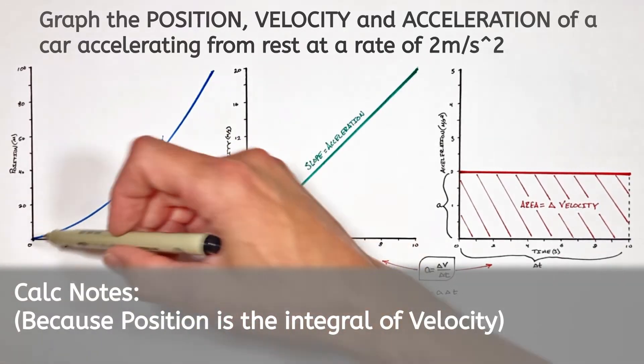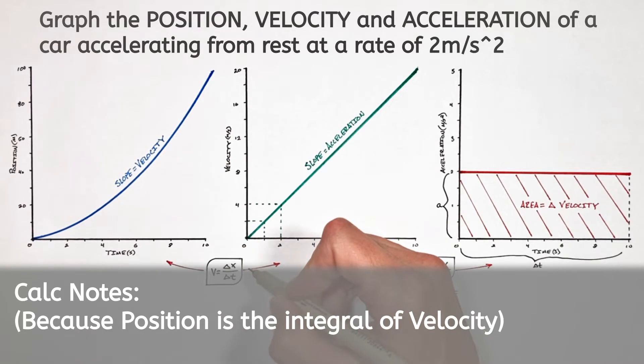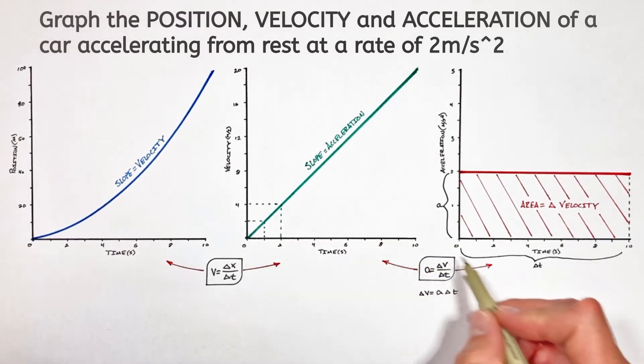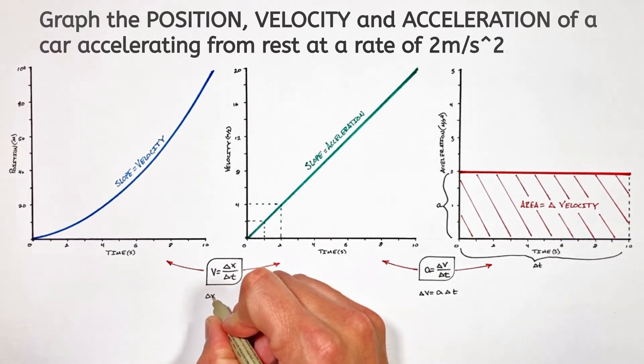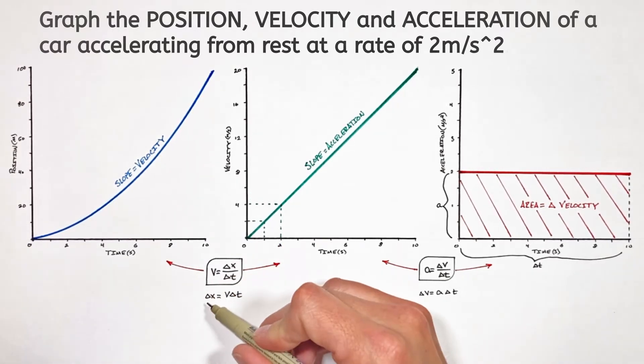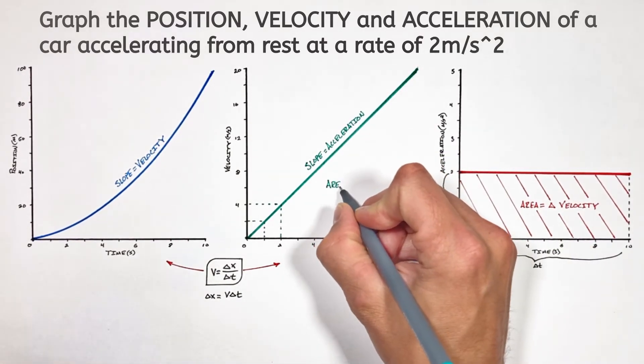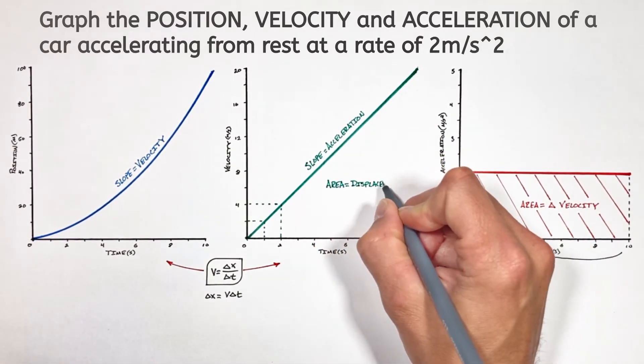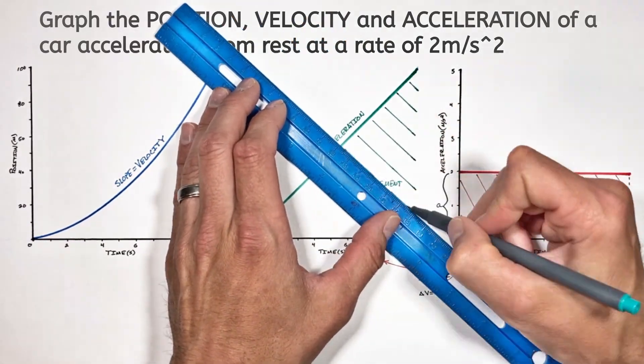Now I worked out this problem ahead of time, so I've already got numbers over here on our y-axis. But let me show you where these come from. Just like when we rearrange this equation for the change in velocity, let's rearrange this equation for our change in position or displacement. Ultimately what this is telling us is that the displacement equals velocity multiplied by time, or really the area under the curve of our velocity versus time graph.